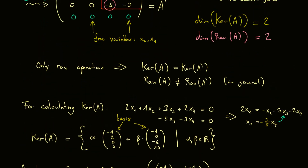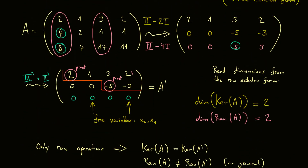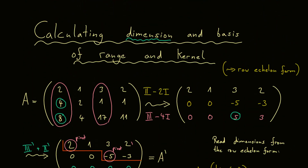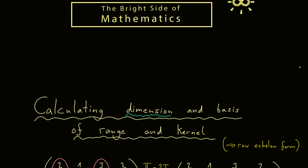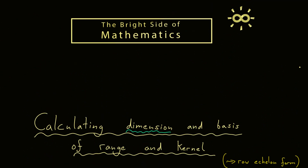As a quick recap: we knew we had to calculate both the range and the kernel. For the kernel we need the row echelon form, and the idea was to use that same row echelon form to extract all the information for the range as well — avoiding a second separate calculation. We saw that row operations may change the range, but we can still get the dimension and identify the linearly independent columns. I really hope that helped you, and see you next time.